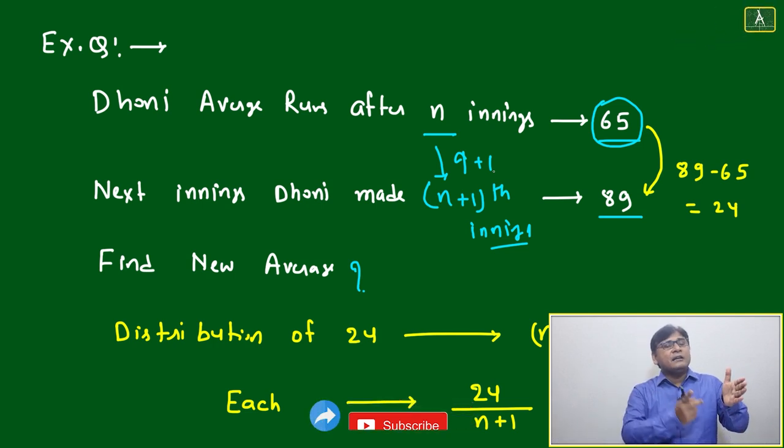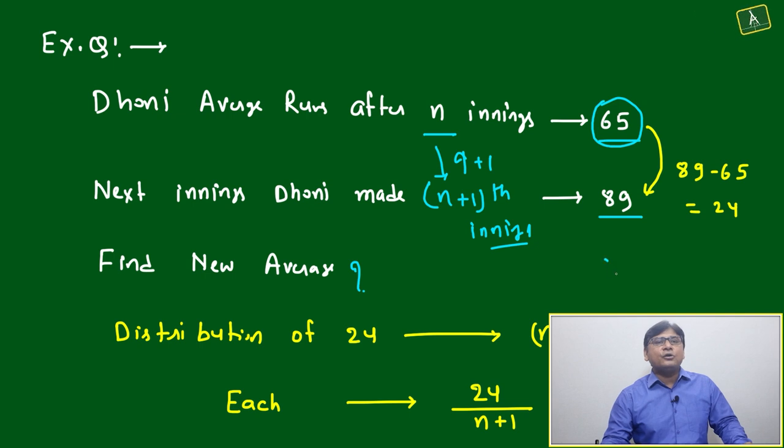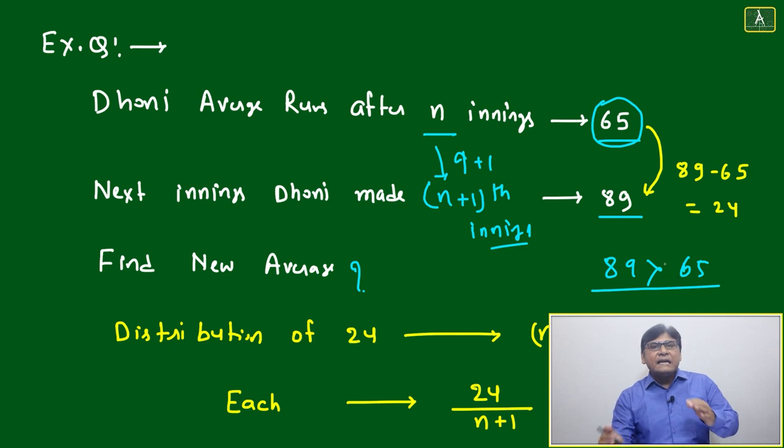This number we are adding, 89, we can 100% say it is more than the existing average of 65. If it is more than 65, then what will happen? 65 will go there to settle the average and the remaining extra number will distribute to the other numbers.